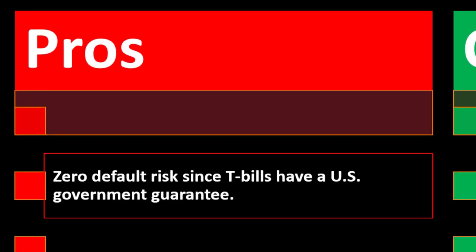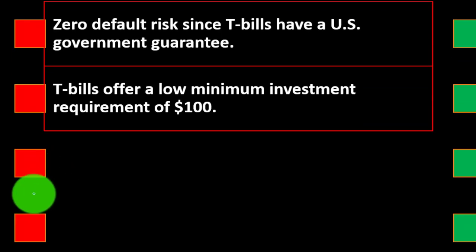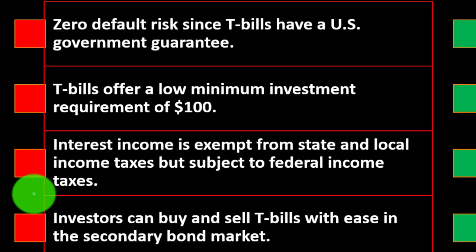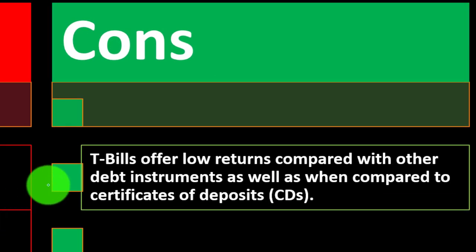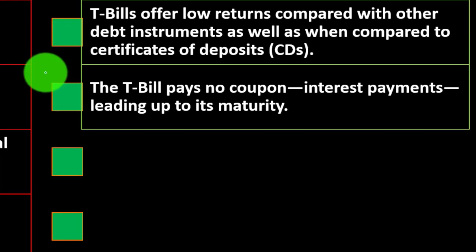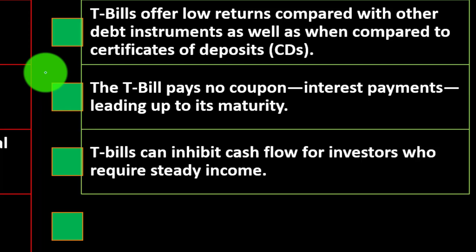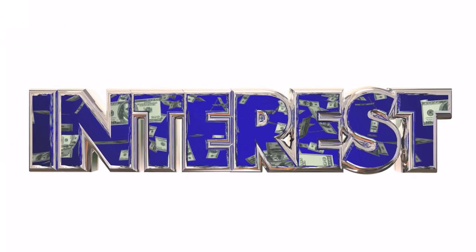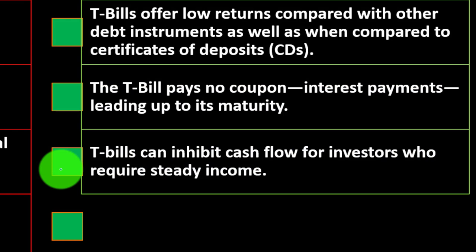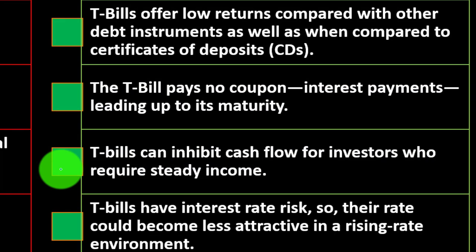Pros: zero default risk since T-bills have a U.S. government guarantee. T-bills offer a low minimum investment requirement of $100. Interest income is exempt from state and local income taxes, but subject to federal income taxes. Investors can buy and sell T-bills with ease in the secondary bond market. Cons: T-bills offer low returns compared with other debt instruments as well as certificates of deposit. The T-bill pays no coupon interest payments leading up to maturity — the interest rate is built into the fact that you pay less than the maturity price. T-bills can inhibit cash flow from investors who require steady income, and have interest rate risk, meaning their rate could become less attractive in a rising rate environment.